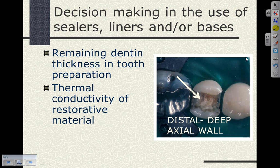We're going to make decisions about the use of sealers, liners, and/or bases based upon the remaining dentin thickness in the tooth and the thermal conductivity of a restorative material. Metallic restorative materials are far more thermoconductive than our composites and ceramics. Looking at this clinical preparation of the mandibular second premolar, the distal axial wall has a very deep preparation, and consideration must be given to what sort of liners will we need to provide some level of pulpal protection.